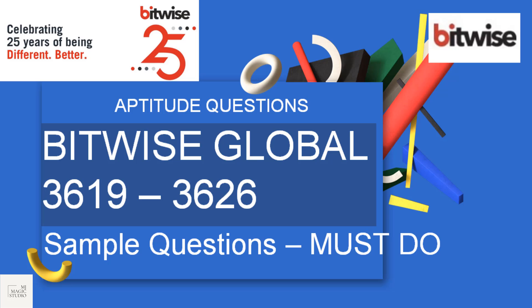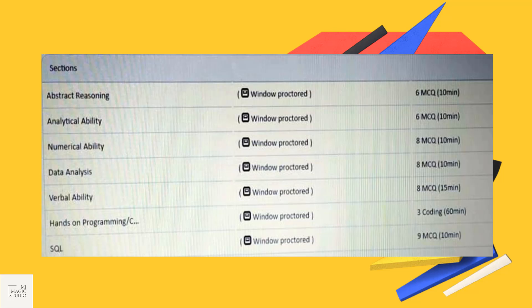Today with the Bitwise Global few sample questions which you should practice because they give quicker rounds of aptitude questions like in abstract reasoning, 6 questions which we need to do in 10 minutes. Analytical ability which is again verbal reasoning basically, 6 questions to be done in 10 minutes. Numerical ability you can see 8 MCQs, 8 questions which we need to do in 10 minutes and we need to be really quick here.